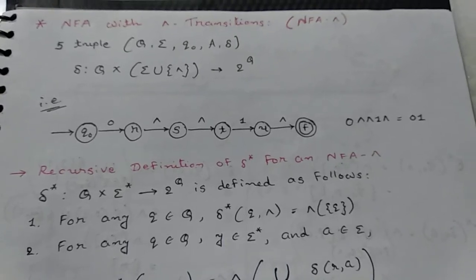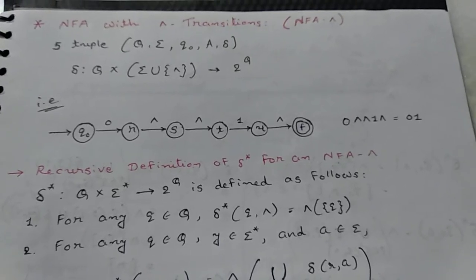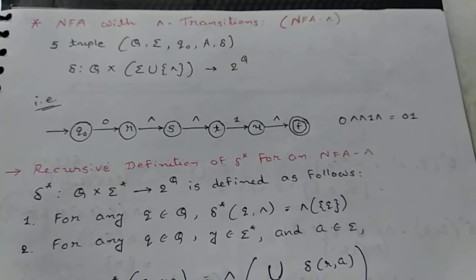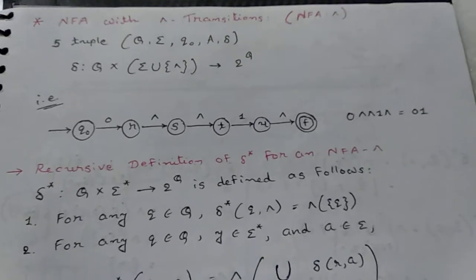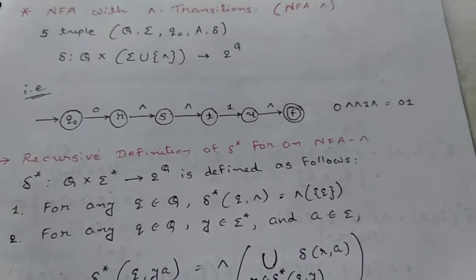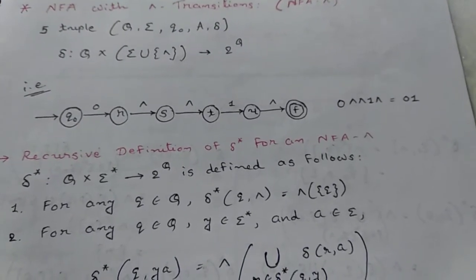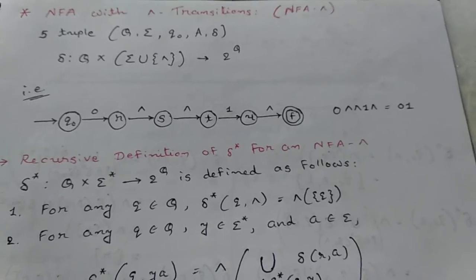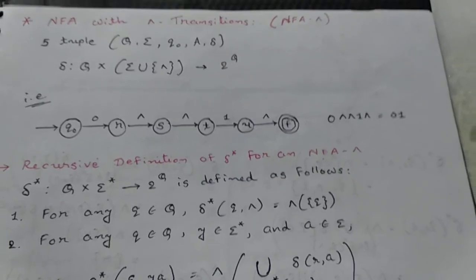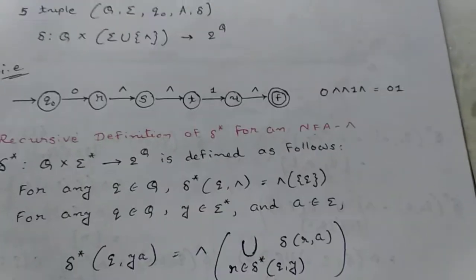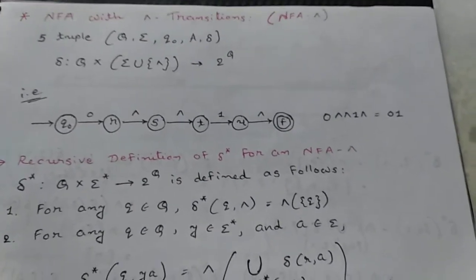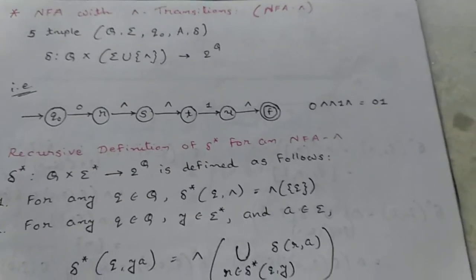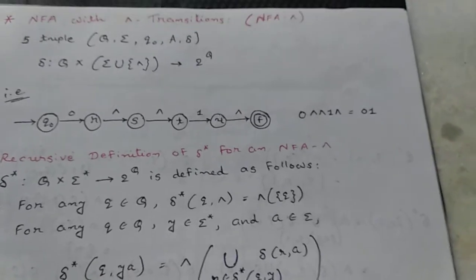Hello friends, today I discuss NFA with epsilon transition, the recursive definition of delta star for NFA epsilon, and epsilon closure of a set of states — how to find the epsilon closure. First, what is NFA with epsilon transition?